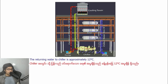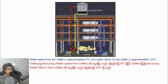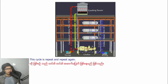This heat is then returned back to the chiller. The return water to the chiller is approximately 12 degrees Celsius. This water is then sent back through the chiller again. Water leaving the chiller is approximately 6 degrees Celsius and water returned to the chiller is approximately 12 degrees Celsius. This cycle repeats again and again.